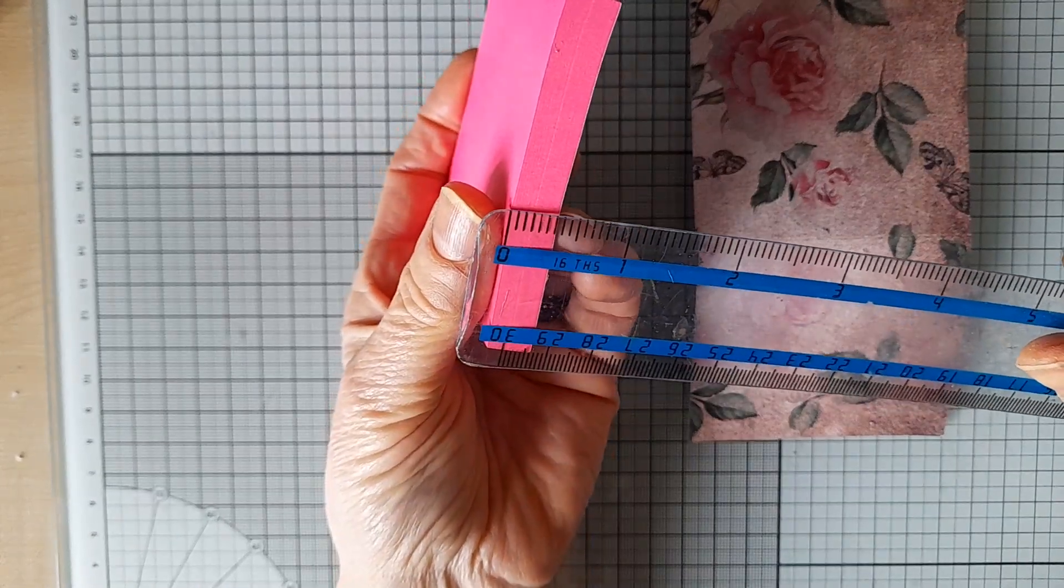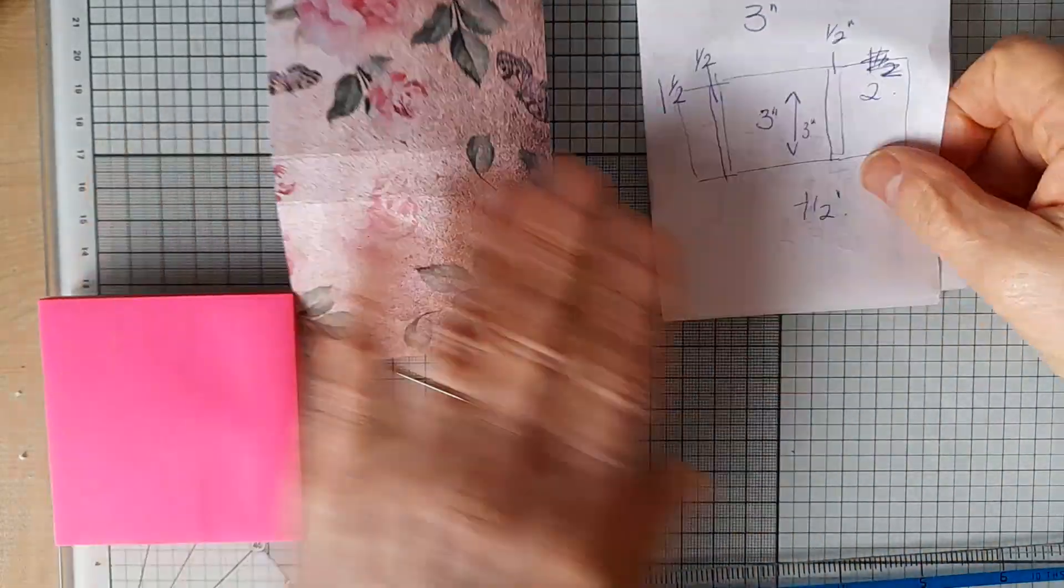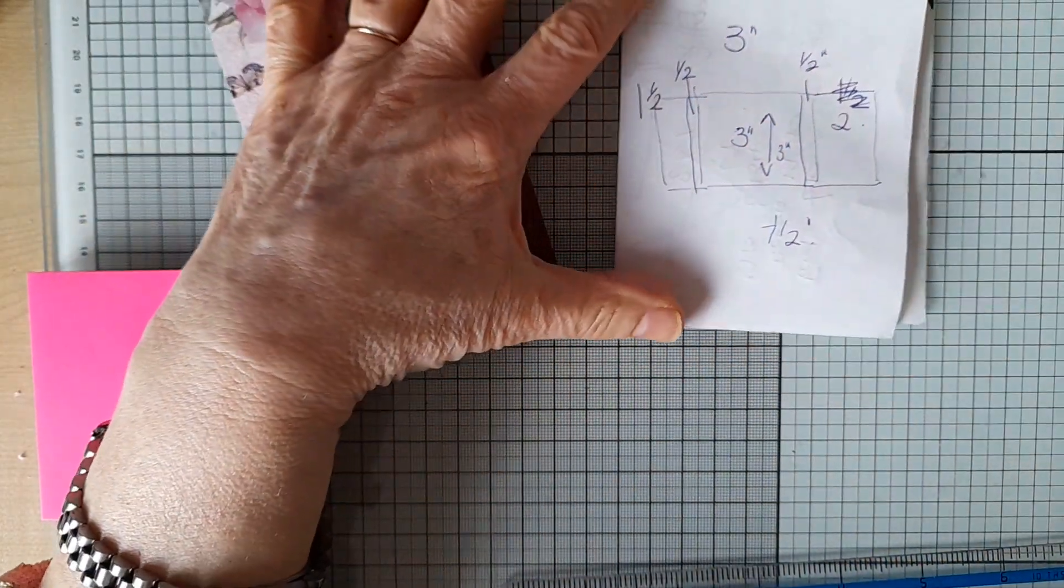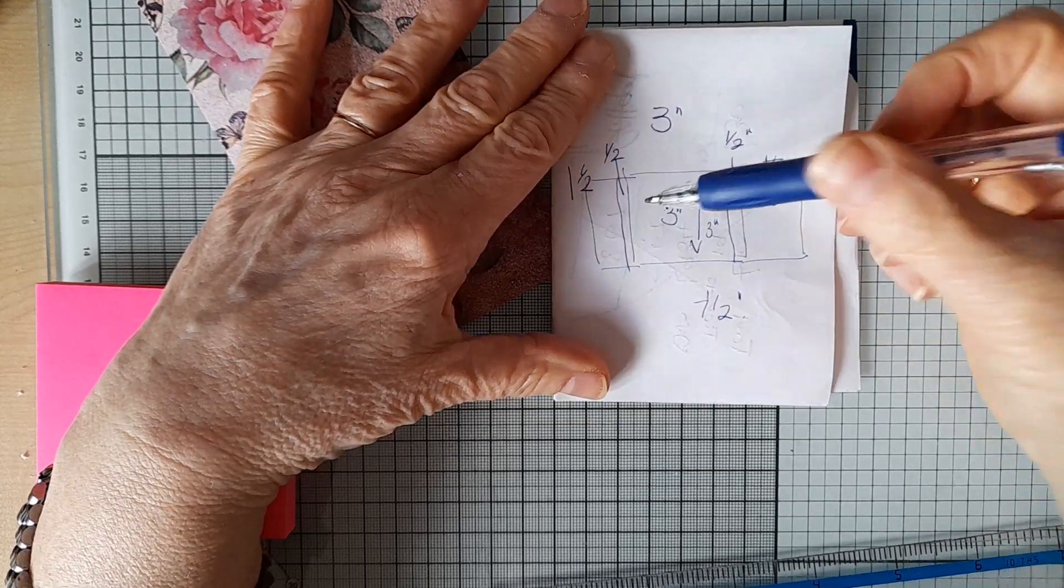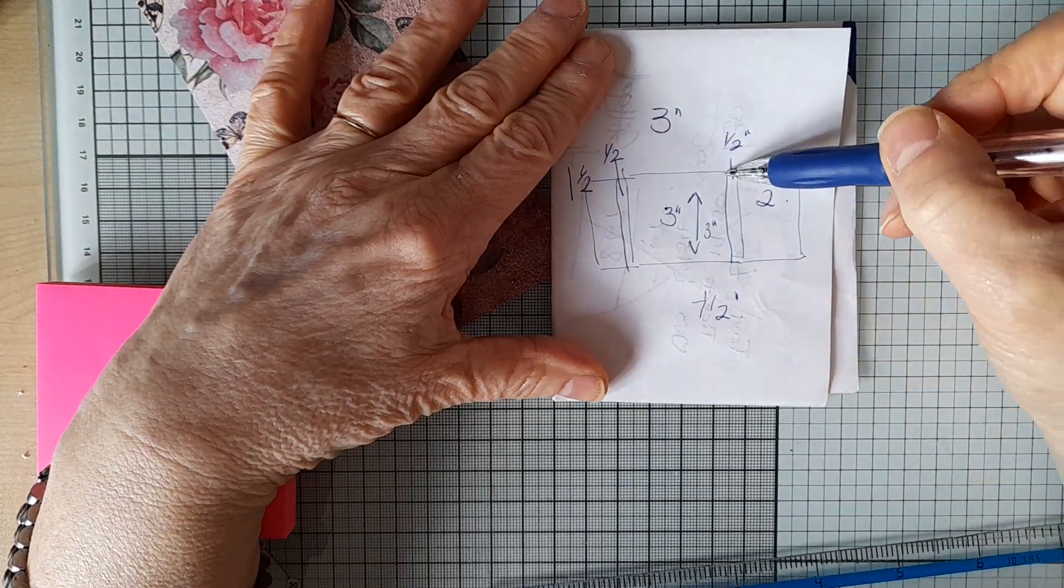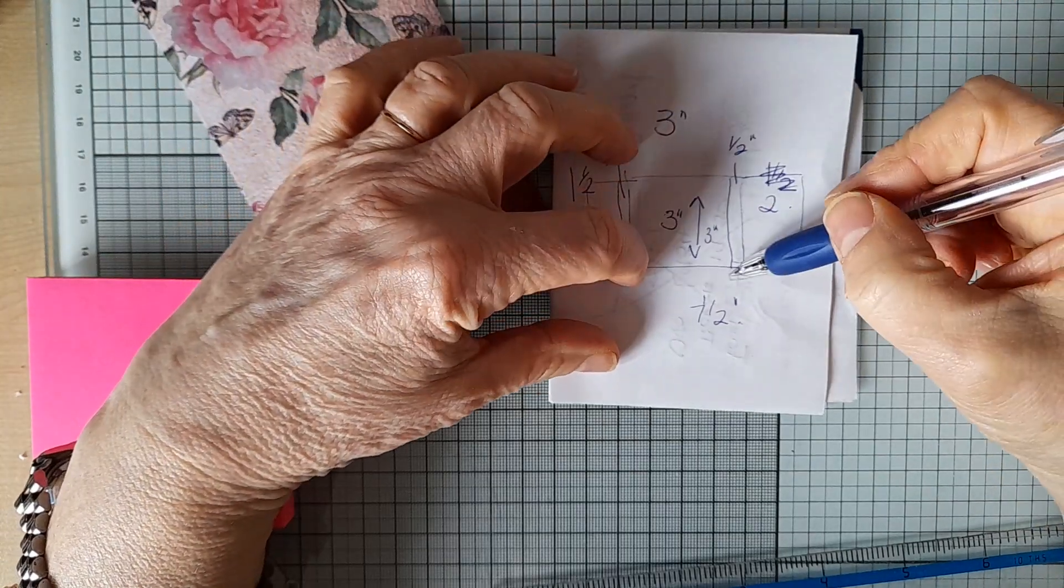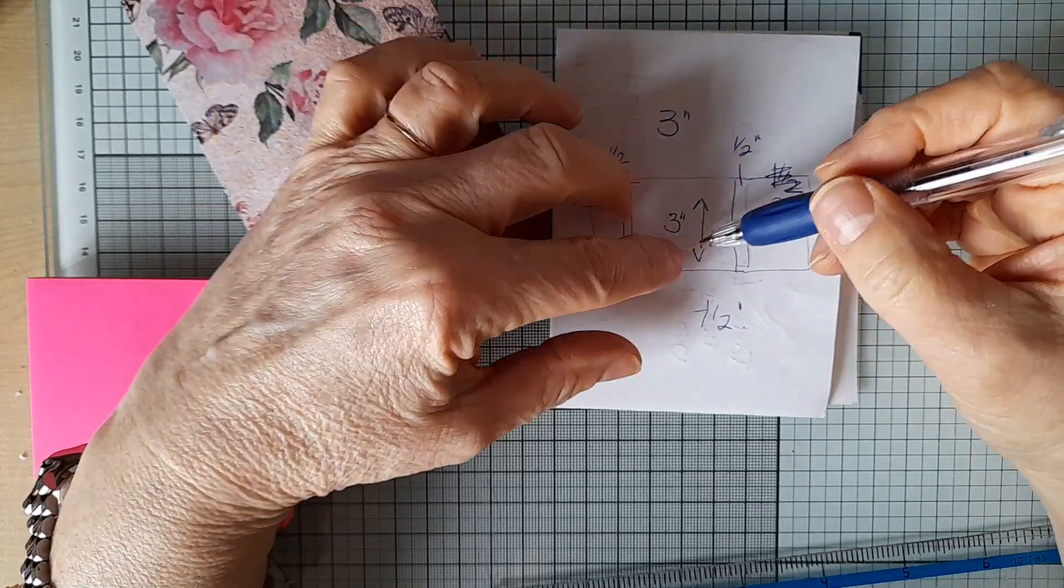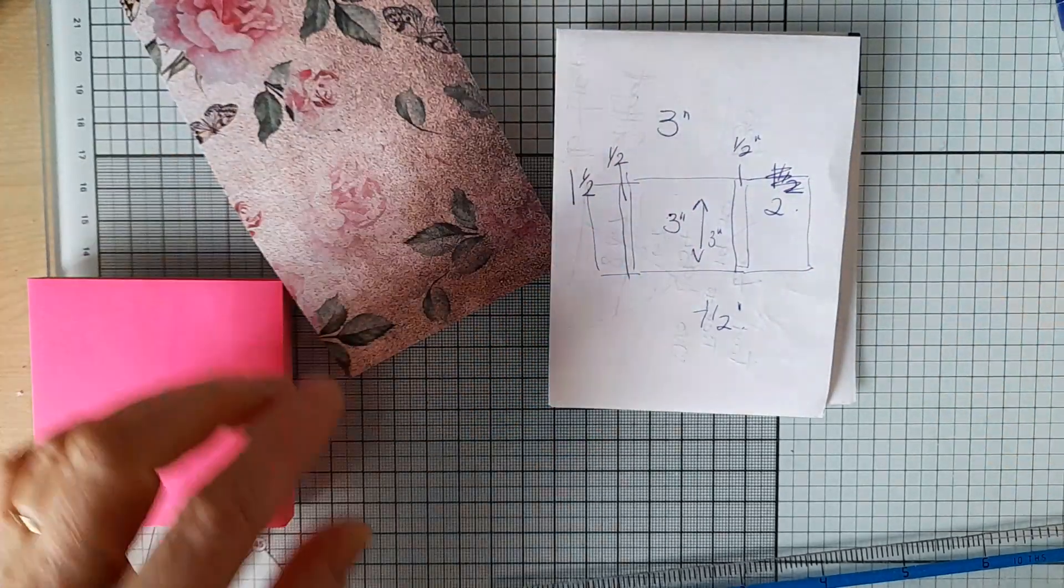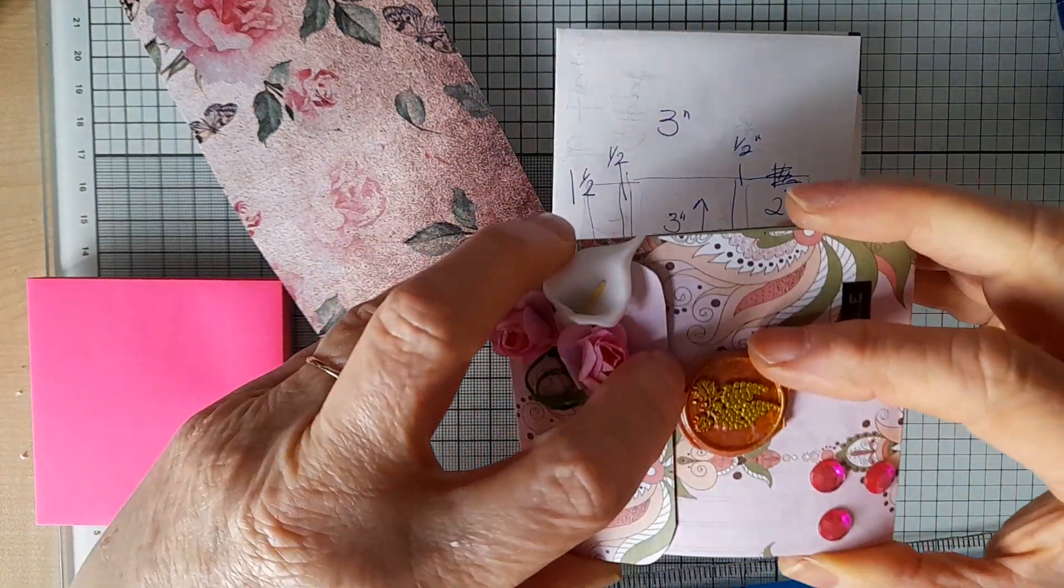So I worked out on a piece of paper this is my diagram. This is the three inch square and I've added on half an inch on both sides to make the bit that stands up on the cover, and then of course the top bit needs to be three inches plus a little bit so that you've got a bit of an overlap so that can tuck in and stay secure.